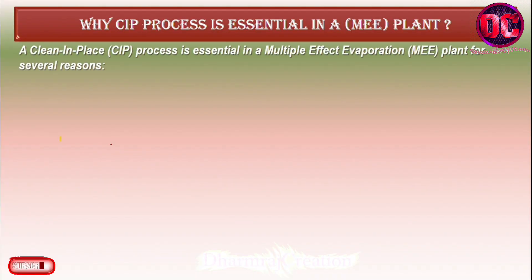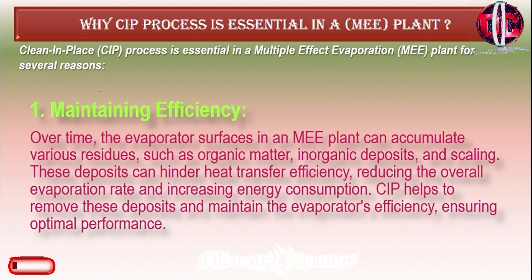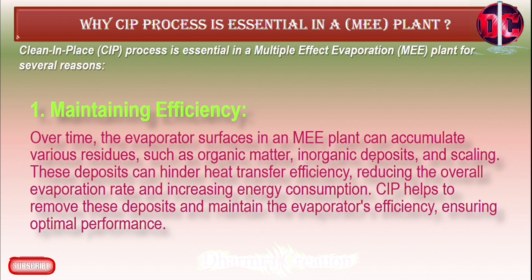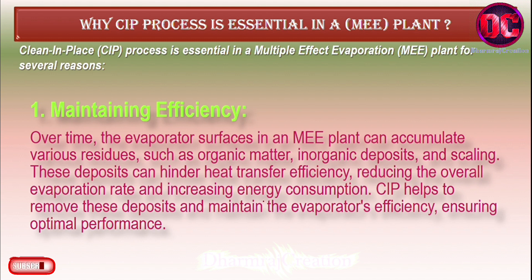A clean-in-place (CIP) process is essential in a multiple effect evaporation (ME) plant for several reasons. First, maintaining efficiency over time: the evaporator surfaces in an ME plant can accumulate various residues such as organic matter, inorganic deposits, and scaling. These deposits can hinder heat transfer efficiency, reducing the overall evaporation rate and increasing energy consumption. CIP helps to remove these deposits and maintain the evaporator's efficiency, ensuring optimal performance.